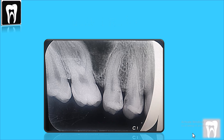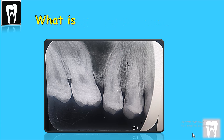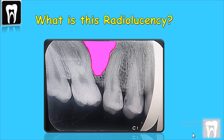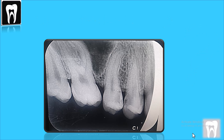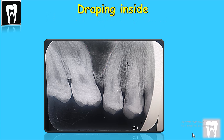What else we can see is the dilaceration in the roots of both the second premolar and first molar. But what is this big radiolucency right here? Well, this is actually the maxillary sinus — the imaging of the floor of the maxillary sinus, which is a thin well-defined radiopaque line. The maxillary sinus is pneumatized inferiorly into the alveolar process between the teeth. We call it the dropping of the sinus over the apex.